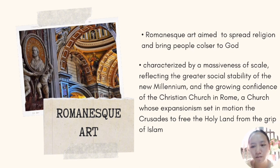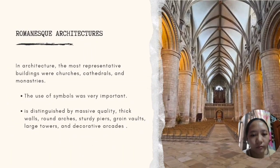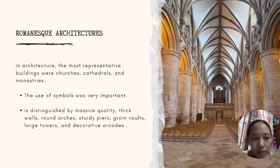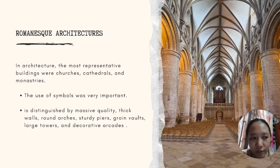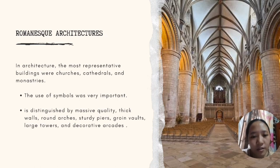Romanesque art aimed to spread religion and bring people closer to God. In this period, the most representative buildings were churches, cathedrals, and monasteries. In Romanesque architecture, the use of symbols was very important — everything had a message, from the shape of the buildings to the materials and motifs used. The artists in Romanesque architecture were mostly anonymous craftsmen.